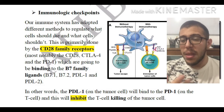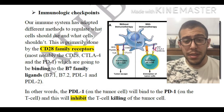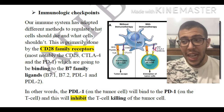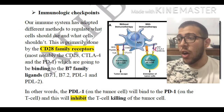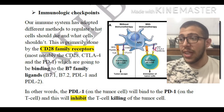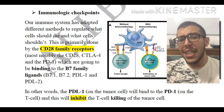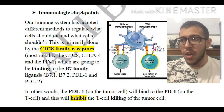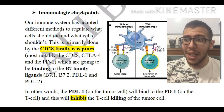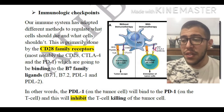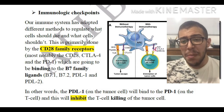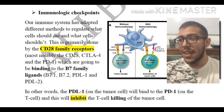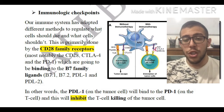The PDL1, or PD ligand 1, on the tumor cell is going to be binding to the PD1 on the T cell, and this is going to be inhibiting the T cell killing of the tumor cells.